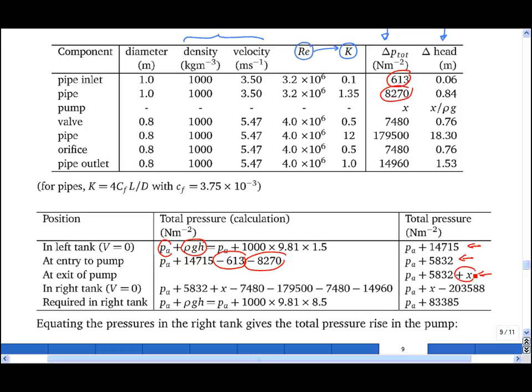And then by the time we get to the right-hand tank, we've lost some total pressure due to the valve, some due to the pipe, some due to the orifice, and some due to the pipe outlet. And this gives us the total pressure in the right-hand tank, including our unknown x.